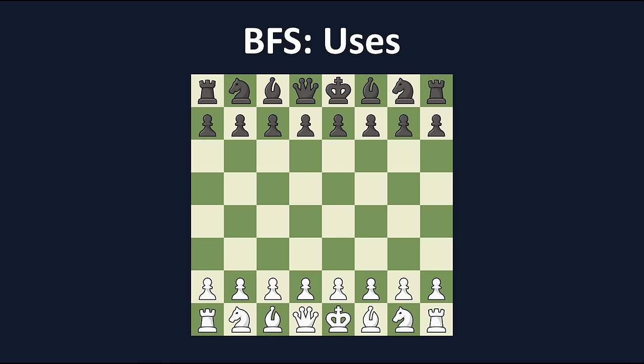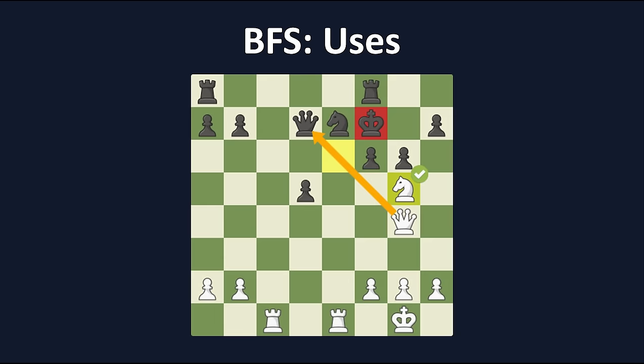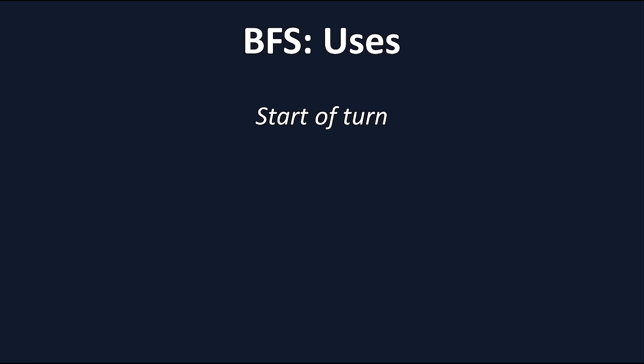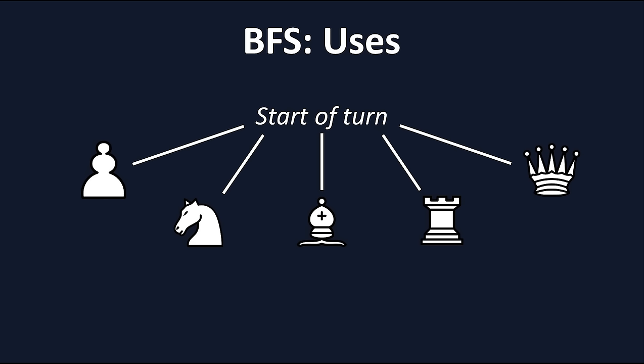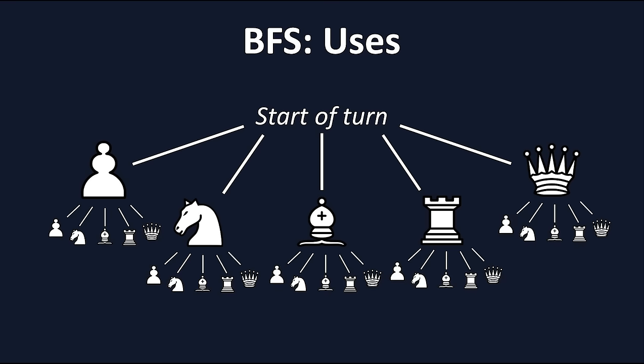One real-life example of where breadth first search is used is for chess algorithms. For those of you who don't know what this is, it's where a computer program predicts what the next best move is for any given point in a game. The way they work is by starting at a certain player's turn and taking a look at each possible move they have next. The algorithm looks at all possible moves for the next turn, and then looks at all possible moves from all of those possible moves. As I'm hoping you can start to see, this is just depth first search, where the nodes are moves and the levels are turns.